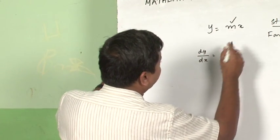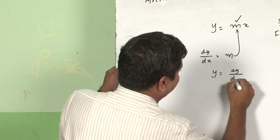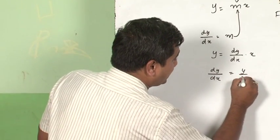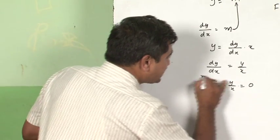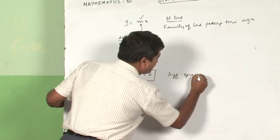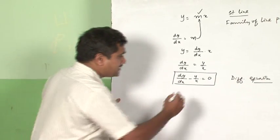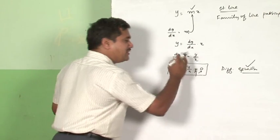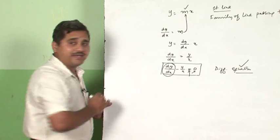Differentiating y = mx gives dy/dx = m. I replace m with dy/dx in the original equation, giving y = (dy/dx)·x. Separating terms, I get dy/dx − y/x = 0. The structure I have arrived at is called a differential equation. It is an equation because it contains an equals sign. It is called a differential equation because derivatives are seen here.